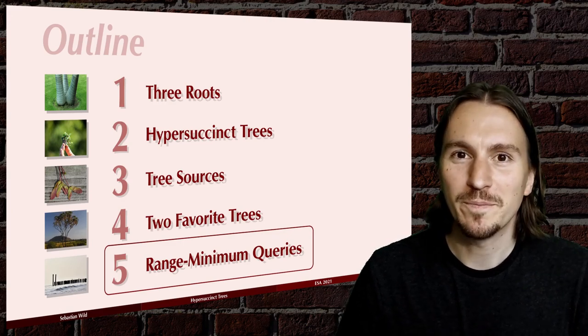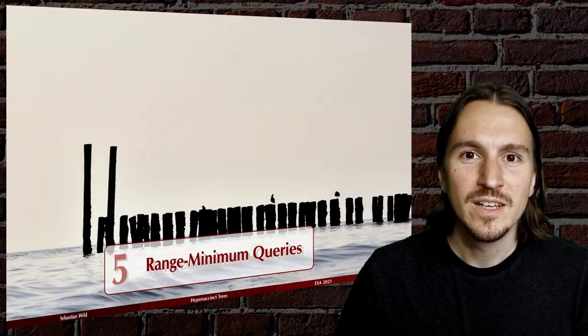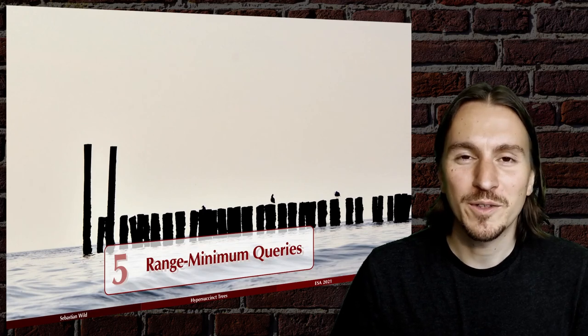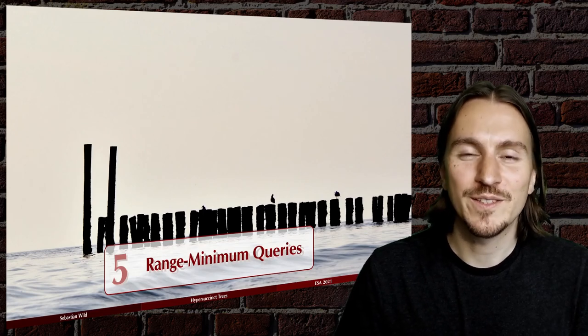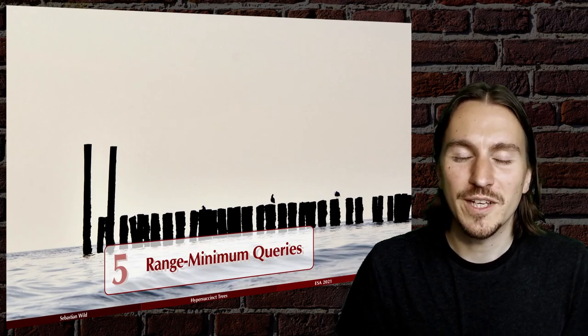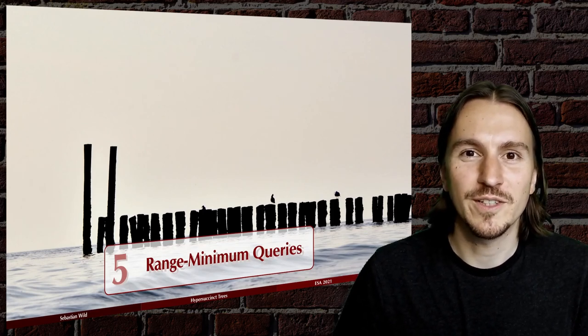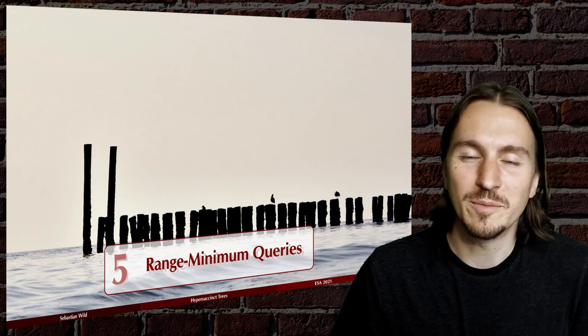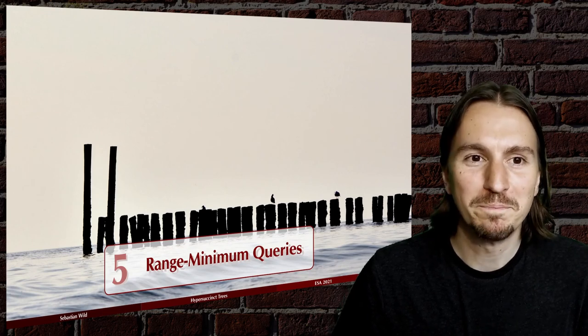We store the bows suboptimally, but because it's a fringe-dominated distribution, those are a vanishing fraction of the tree and we can ignore them. The twigs can still make up a lot of the tree, but we use the depth-first arithmetic code for those, storing them in optimal space. Hyper succinct trees are a tree data structure that automatically adapts in space usage to redundancy found in a given tree.